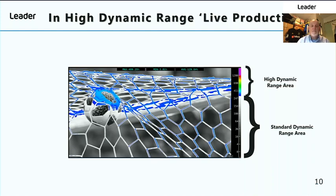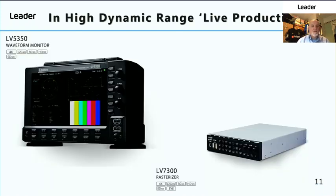If anything is purple, it means even an HDR display will clip the image — it's been overexposed, overdriven. Fortunately, all of the LEADER products support HDR analysis as a software license.